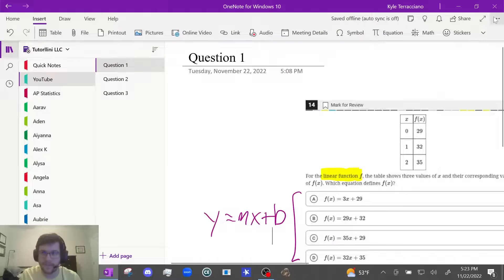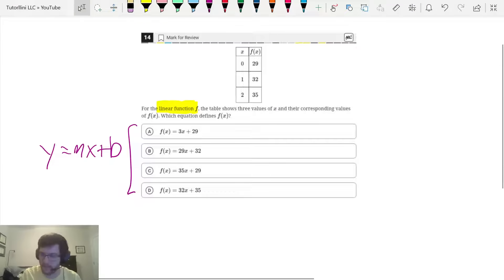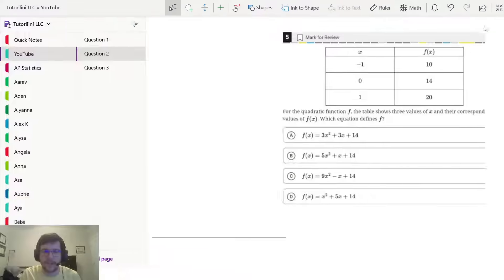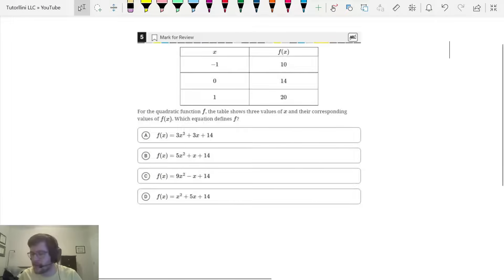So let's go back to question 1 and pick 3x plus 29, which is answer choice A. Great, let's try another one. This one's different, but now that you have some idea of what to do, see if you can pause this video and try it on your own.